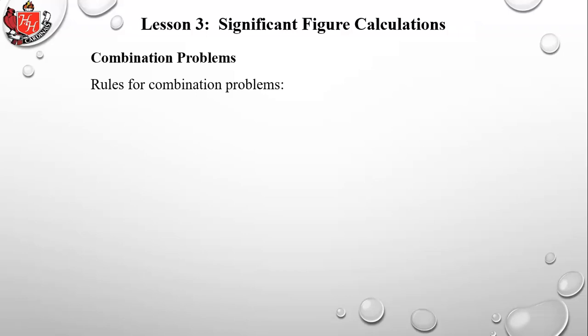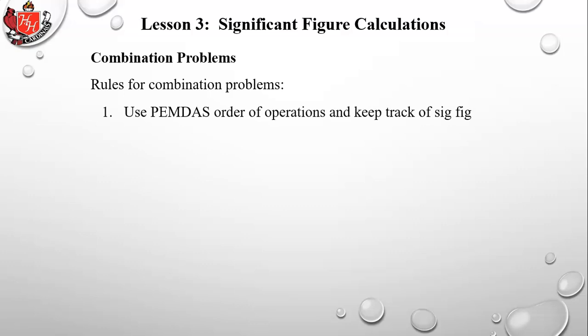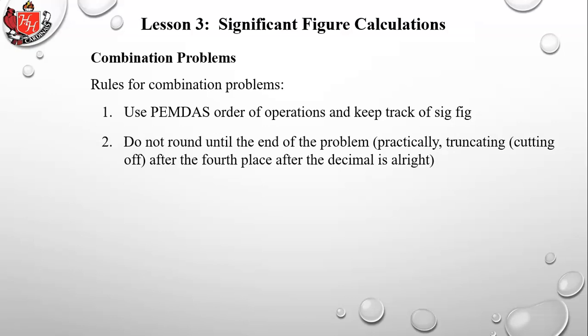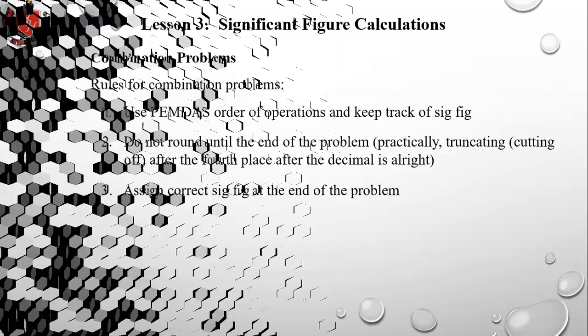For combination problems with multiplications, divisions, additions, and subtractions all mixed together, use PEMDAS (order of operations) and keep track of significant figures — but do not round until the end of the problem. Truncating after about the fourth decimal place is acceptable. Assign the correct sig figs only at the final answer.